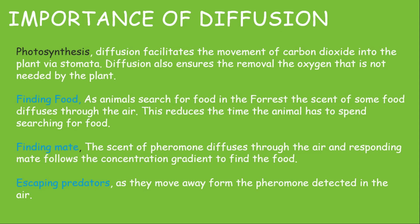Organisms also use diffusion to find mates: the scent of pheromones diffuses through the air and a responding mate follows the scent along a concentration gradient — from low concentration toward high concentration — to find the mate. Conversely, organisms escape predators by moving away from areas of high concentration of the predator's scent toward areas of lower concentration, so as to stay alive.